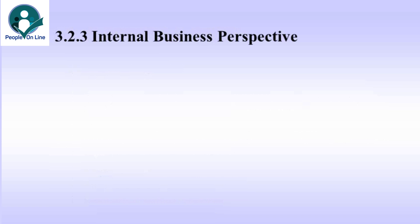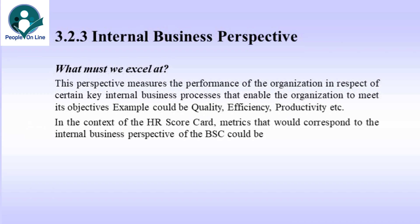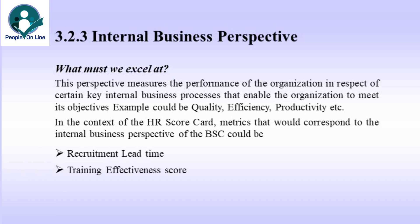The internal business perspective can be best summed up by the question: What must we excel at? This perspective measures the performance of the organization in respect of key internal business processes that enable the organization to meet its objectives. Examples could be quality, efficiency, productivity, etc. In the context of the HR scorecard, metrics that correspond to the internal business perspective could be recruitment lead time, training effectiveness score, and cost of recruitment.